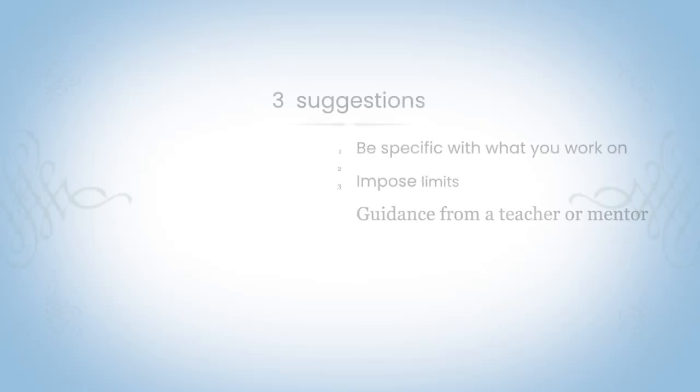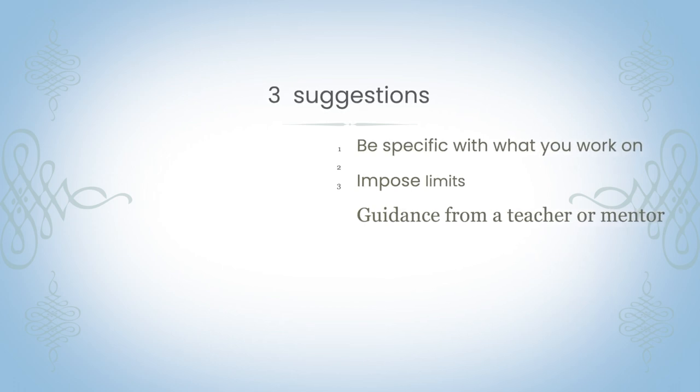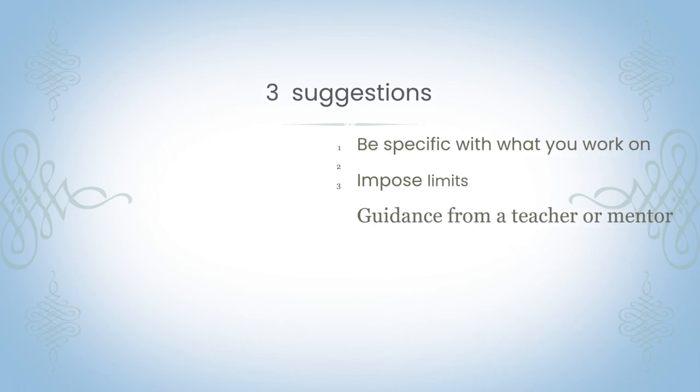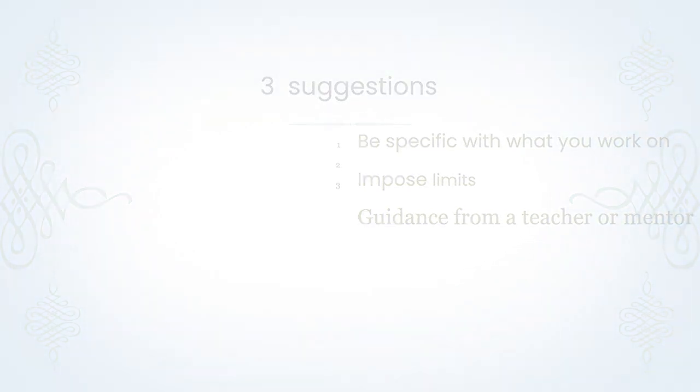What's your decision making like currently in the practice room? Do you have a clear plan, or do you sometimes waste time in sessions thinking 'should I do that now, should I do this now?' — just dead time that you could be practicing? I've got three things that I think can help. One: be super specific with what you're working with. Two: impose limits on yourself. Three: a teacher or mentor can really help here — someone to keep you on track or give you clarity on how to move forward.